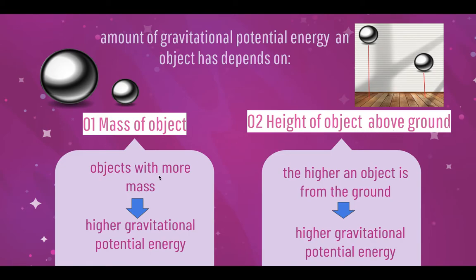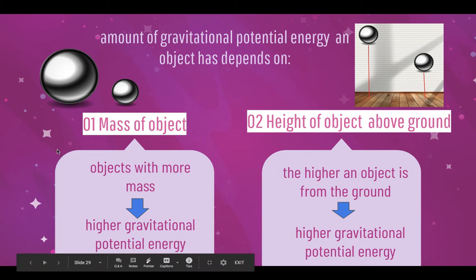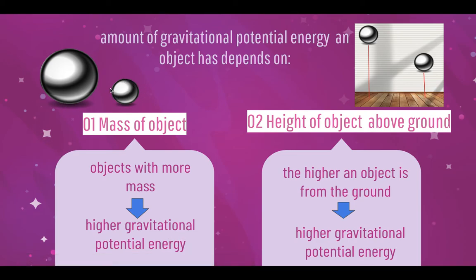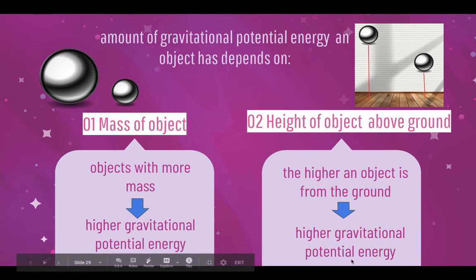An object with more mass, like this bigger ball here which has more mass, has higher gravitational potential energy than the smaller ball of smaller mass. The height of the object above the ground also affects the amount of gravitational potential energy. So, the higher an object is from the ground, the higher the gravitational potential energy.